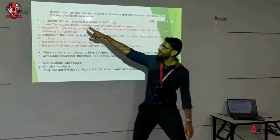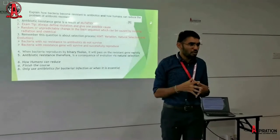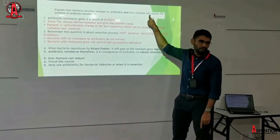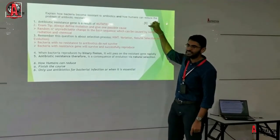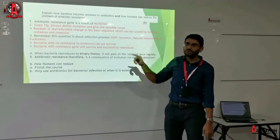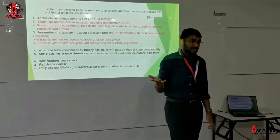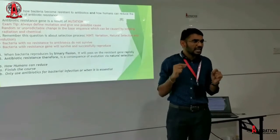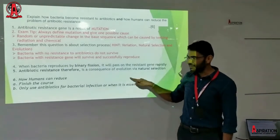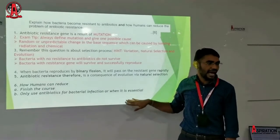That will be answering the first question. Now in exam conditions, students often get stressed out and miss the second part of the question, which will reduce their marks by two or three. So do not forget the second half of the question — students get distracted because they do not highlight it. Only if you are sensitive enough to pick up the full question will you get full marks. You must end your answer by telling how humans can reduce the occurrence of antibiotic resistance.